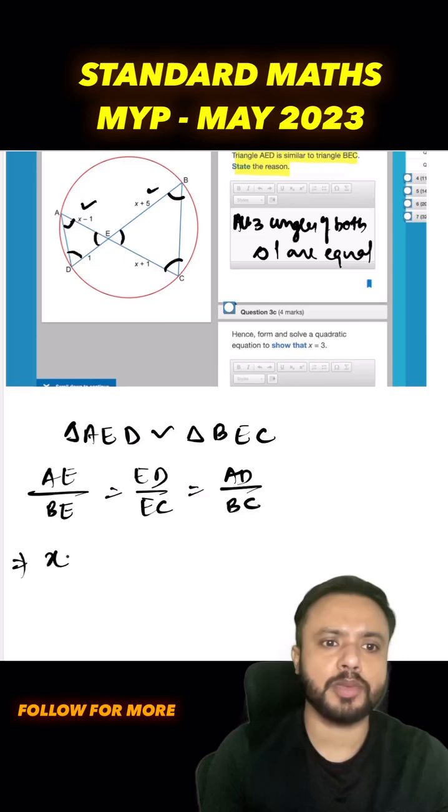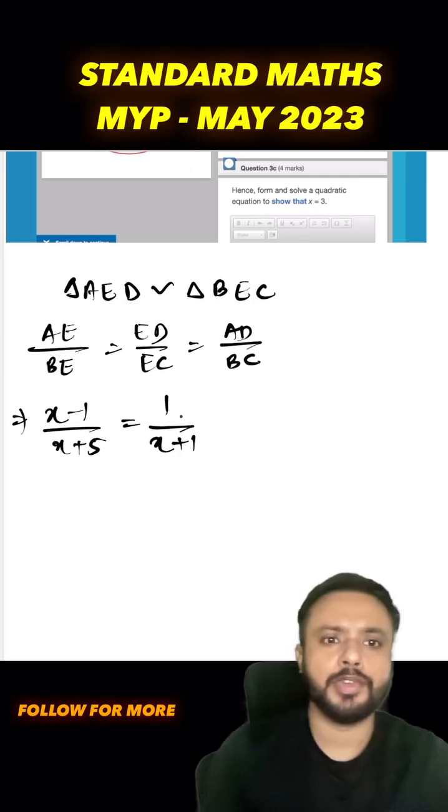Now we'll substitute: AE is x minus 1 upon BE is x plus 5, ED is 1 and EC is x plus 1. So we will solve this equation and we have to show that x is equal to 3.